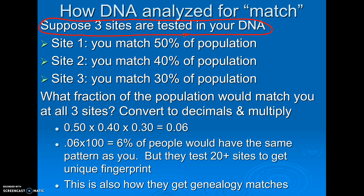If they just tested one site — if I tested everybody in this room at just one cut site — for certain particular sites, it might turn out that the person is a match to 50% of the population. In other words, one cut site is not going to give you a DNA fingerprint; it's not going to be unique to you. 50% of people may get the same exact band pattern as you for that one site.